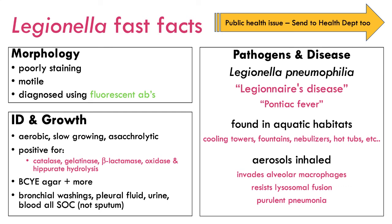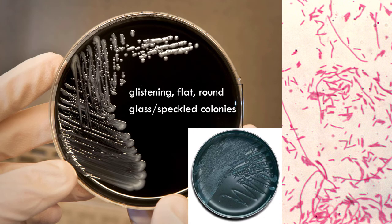The BCYE agar — buffered charcoal yeast extract — appears black due to the charcoal. Growth can be quite variable: glistening, flat, round colonies, sometimes described as ground glass or speckled. When grown in broth, the organisms are very pleomorphic — ranging from long filamentous forms to single bacilli to diplobacilli, making them quite hard to identify morphologically.